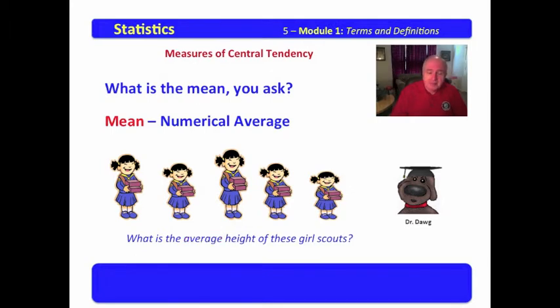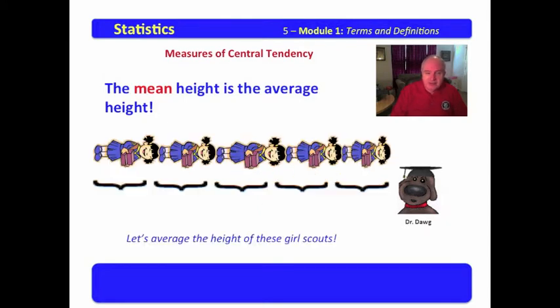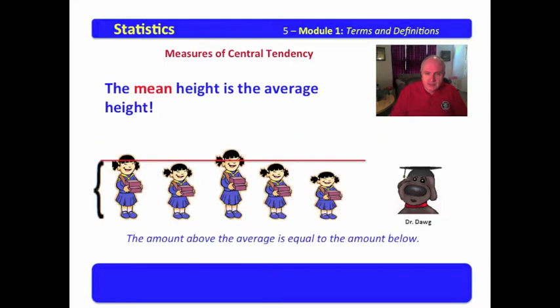What is the mean height of these Girl Scouts? It's the same thing as asking what is the average height. What is the mean height? The mean height is the average height. Now, let's average the height of these Girl Scouts. In order to do that, we will take all five of them, have them lay end to end, and we will see what the total length of these Girl Scouts is. And then we will divide it by the number of Girl Scouts that we have.